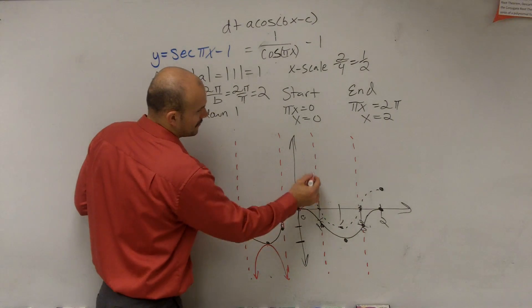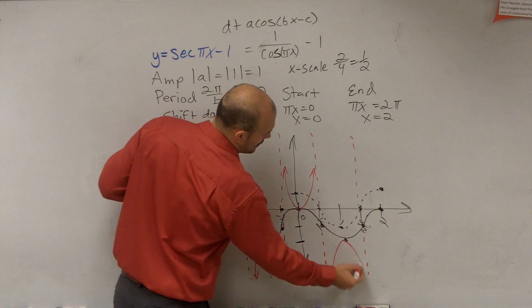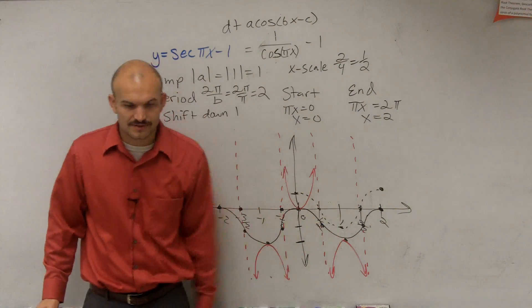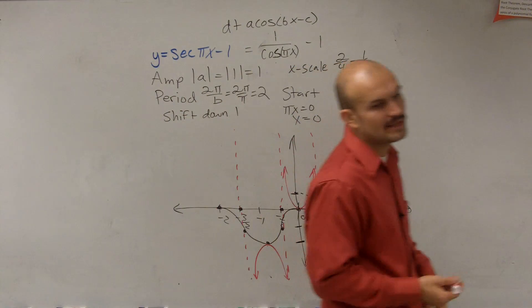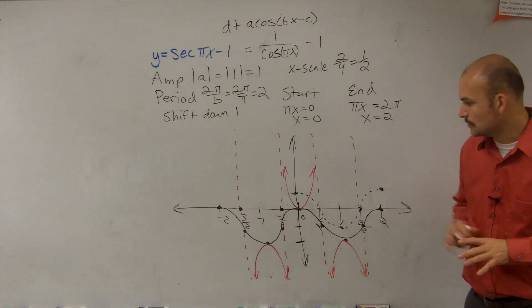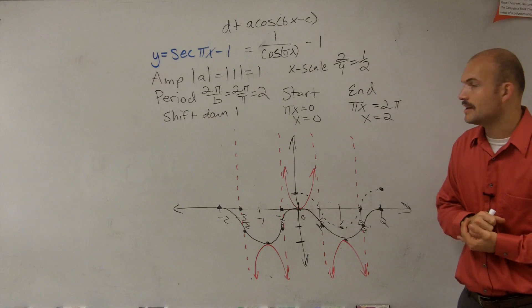So here, it's going to go in the opposite direction approaching the asymptote. And then again, this graph, just like the cosine graph, is going to repeat over and over and over again. But I just wanted to kind of show you what it would look like from two periods over there. Anybody have any questions?